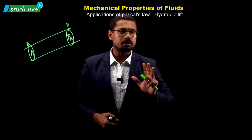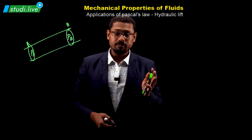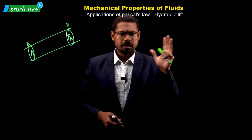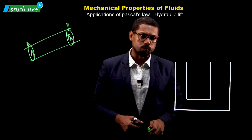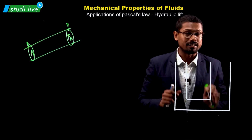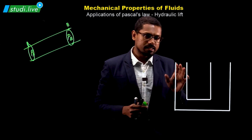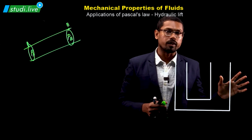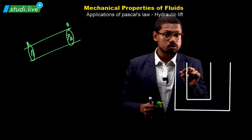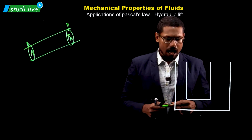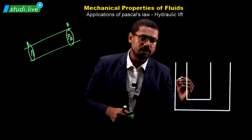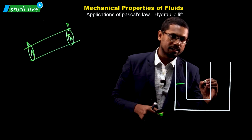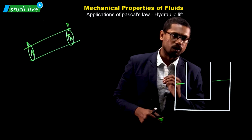A hydraulic lift has the basic tendency of lifting objects — you apply less force and lift heavy objects. Looking at this diagram, we see a container where one arm is very thin and the other arm is very large. The area of one arm is very small and the other is very large. We fill the entire container with liquid, and the liquid level is equal in both arms.